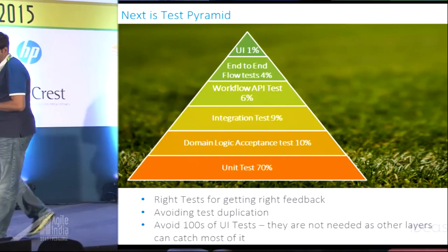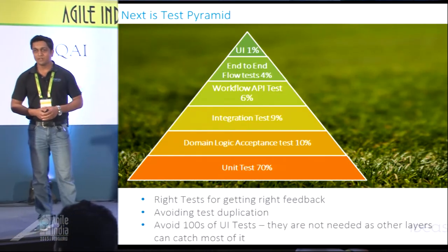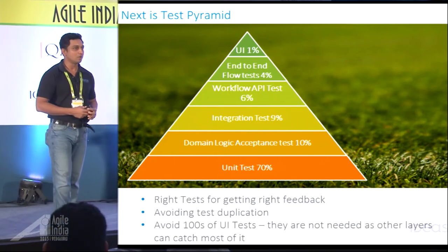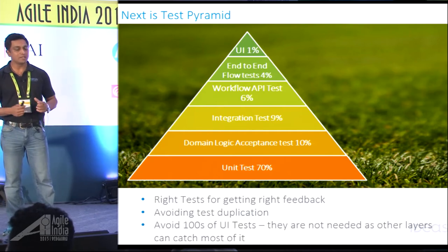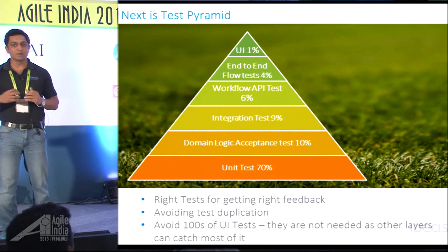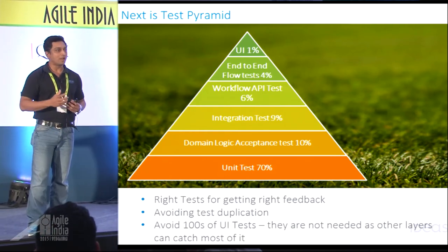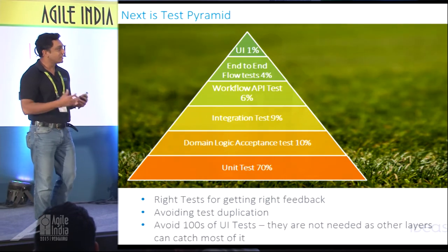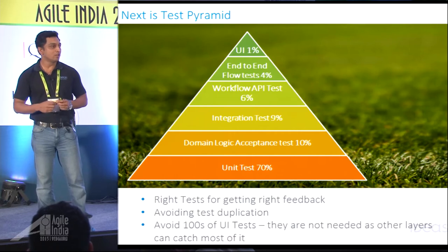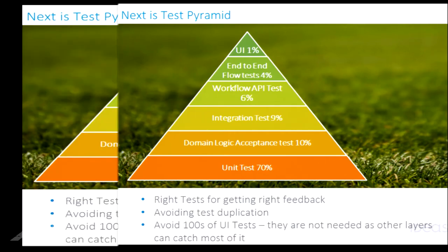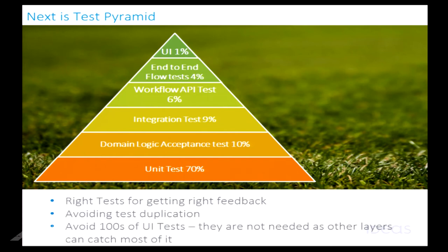Next on our wish list was the test pyramid. We wanted 70% of scenarios covered in unit tests and around 10% in business logic tests and so on. Why? First, tests should give correct feedback at the right level — if unit-level logic fails, it makes no sense for a UI test to tell you something failed, because the UI calls many pieces of code and you won't know which piece failed. So it should give correct feedback at the correct level.